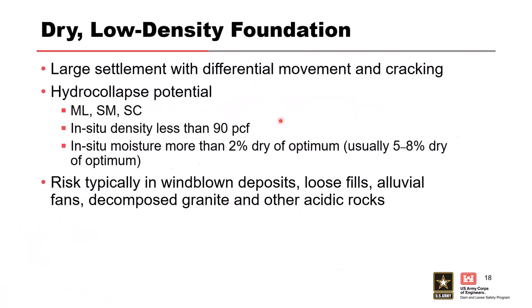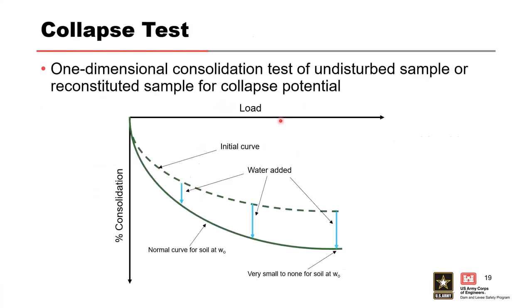We can also have issues with dry, low-density foundations and hydrocollapse. This is typical in windblown deposits — siltier materials. Low-density materials around 87 PCF, for example, can cause problems particularly upon wetting. If dry foundation material is wetted by a new reservoir, hydrocollapse potential arises. Testing shows an initial compression curve followed by a sudden collapse upon adding water. If you see this in your testing, it's a serious issue, and that material should be removed.